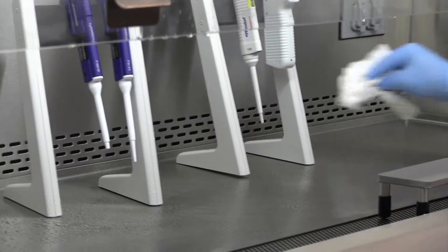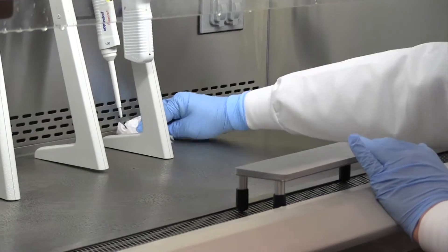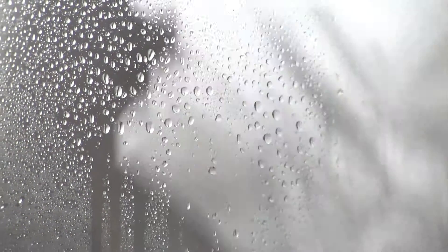Then wipe in straight, non-circular motions. If 10% bleach is used, wipe with sterile water to prevent marking of the stainless steel.